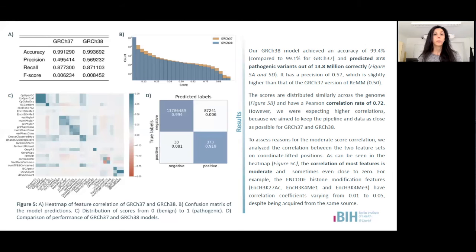To find out what might be a reason for the rather moderate correlation, we calculated the correlation between the feature sets of GRCh37 and 38. And as you can see on the heat map, many of the features have rather moderate correlation, and some correlations are even close to 0, as in the case for encode features of histone modifications. So we can conclude that the rather low correlation of the features can at least partially explain the moderate correlation of the REM scores.